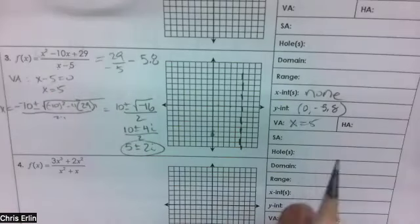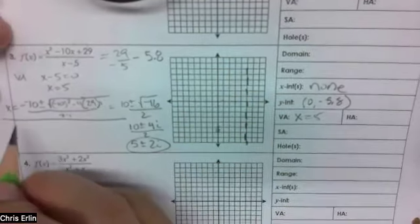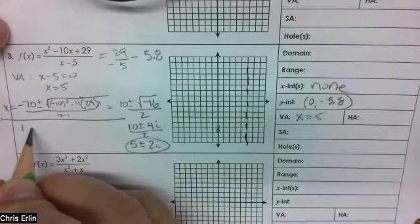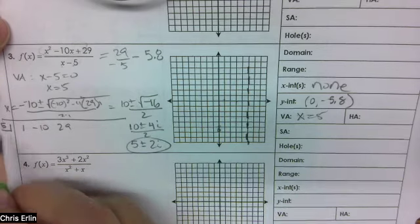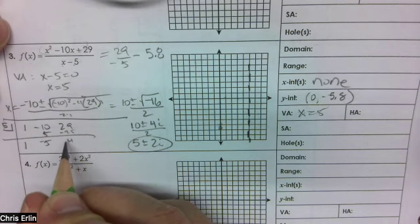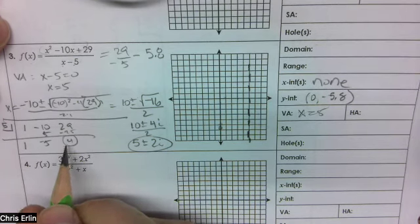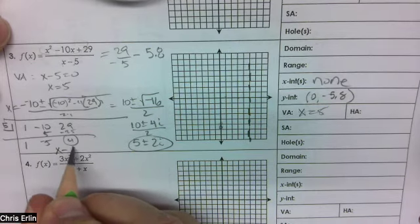And then the top is bigger than the bottom's degree, therefore this is going to be a candidate for an oblique asymptote. So I'm going to do 1, negative 10, 29, use synthetic division here. 1, 5, negative 5, negative 25, 4. It has a remainder, which tells me it's not a clean factor, which tells me that I'm going to take this x minus 5.